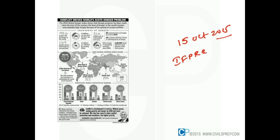On what criteria do we assess the Global Hunger Index? This year it has changed and we have four criteria: stunting, wasting, undernourishment, and under-five child mortality. All four factors are included with regard to this index.